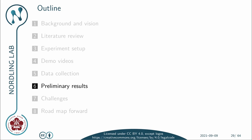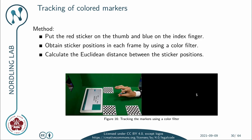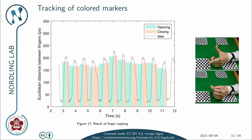Let's take a look at some preliminary results. Good engineering practice dictates that one should always start with the simplest and most established method first, and then gradually refine by using more advanced methods. So we started by putting a red sticker on the thumb of the subject and a blue one on the index finger, so we can obtain the sticker position by simply doing a color filter, and then calculate the Euclidean distance between the sticker positions in each frame and plot it in time.